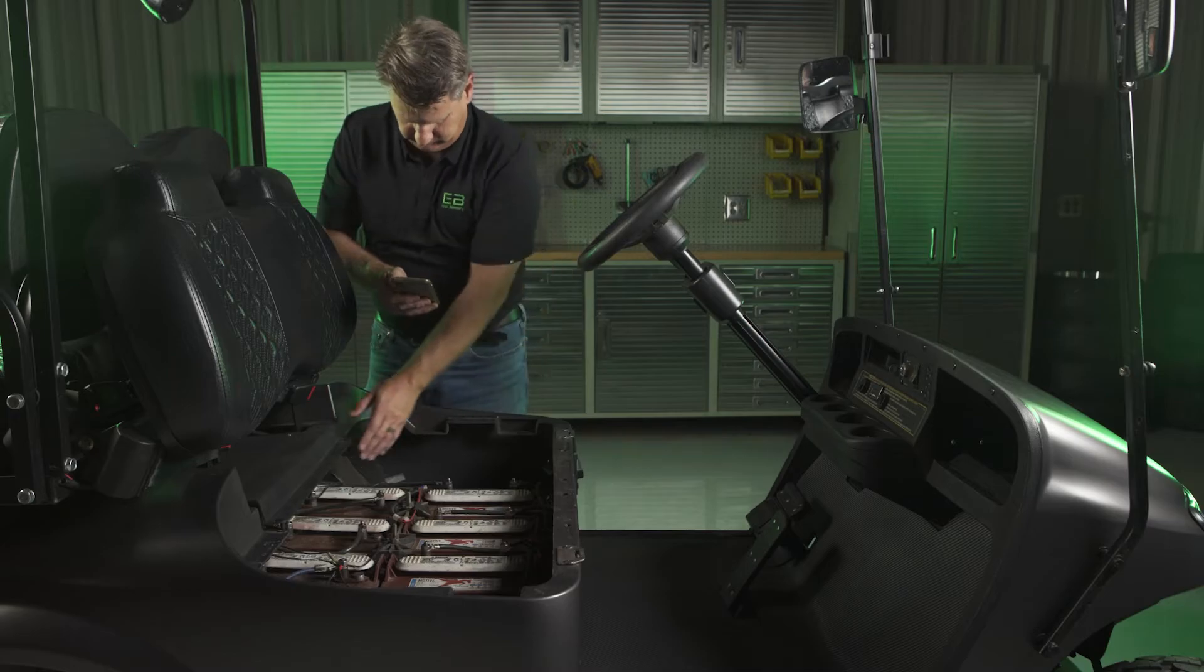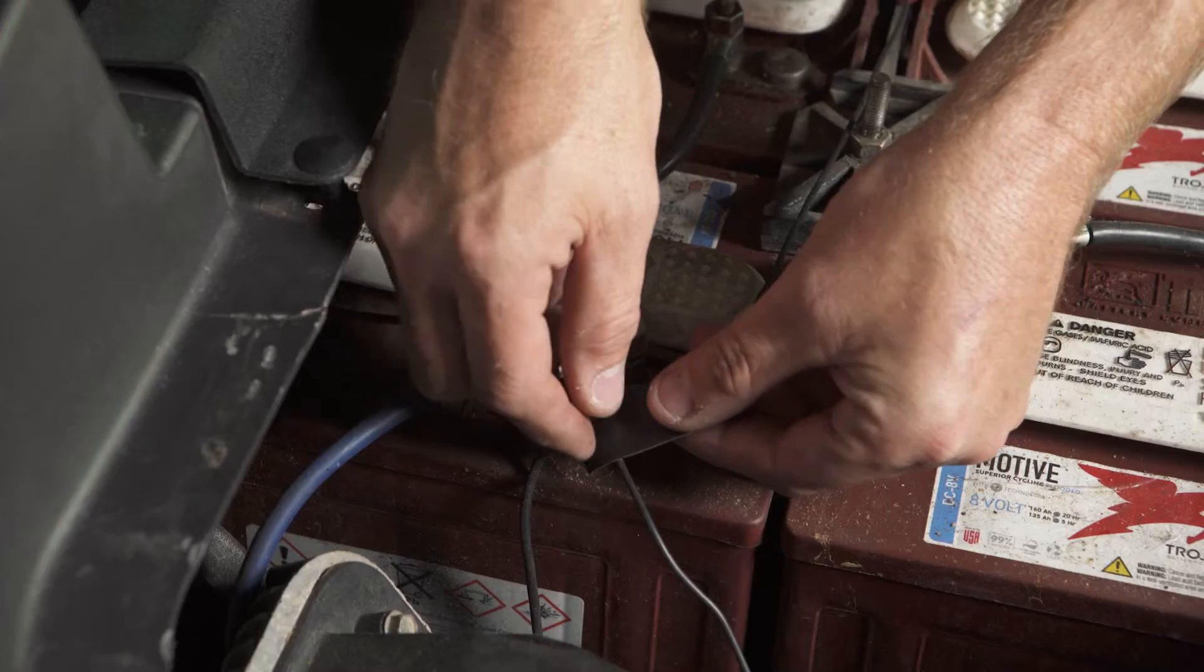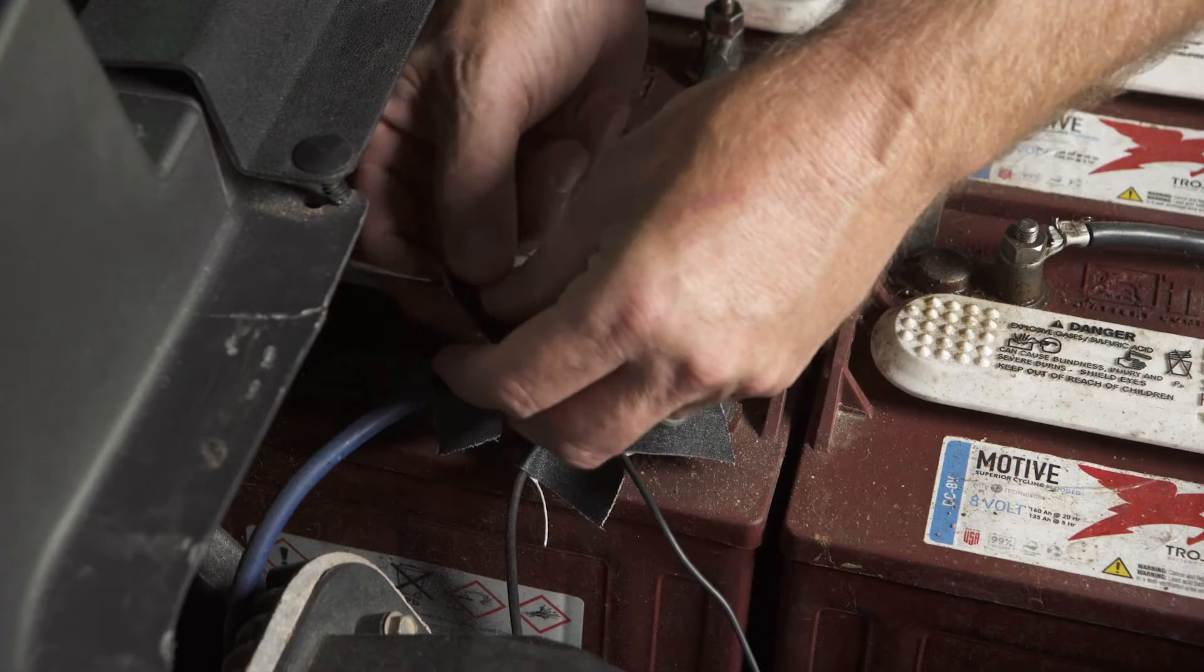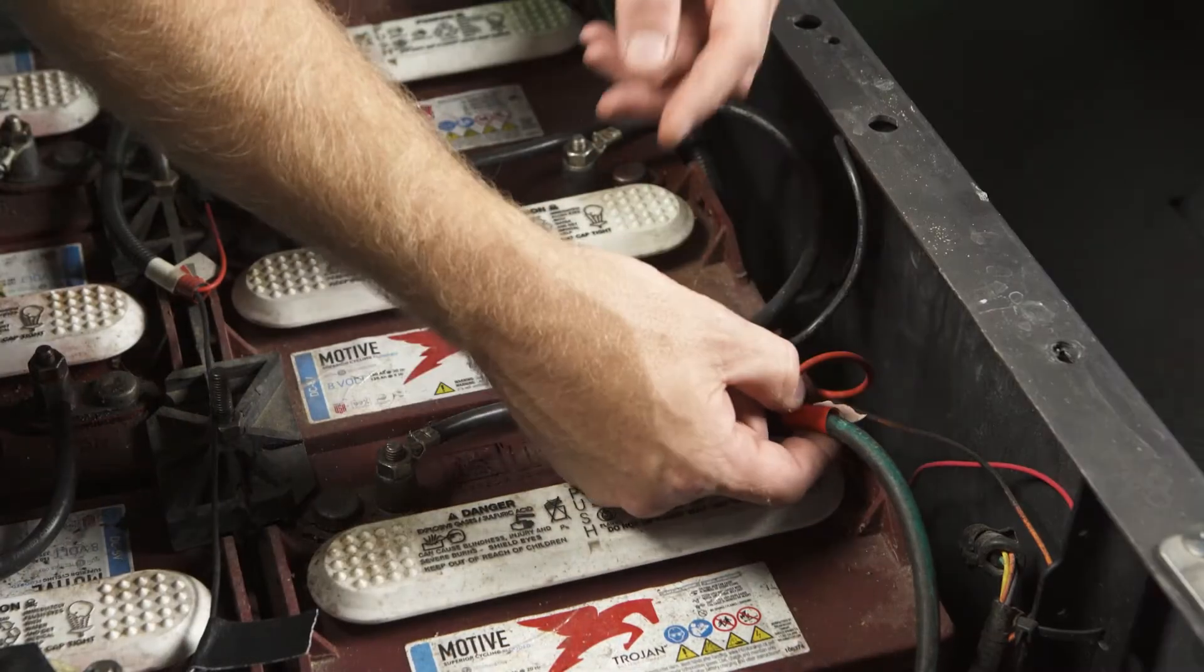Photograph the existing battery compartment. Identify and label the main positive cables, main negative cables, and any additional wiring associated with the batteries.